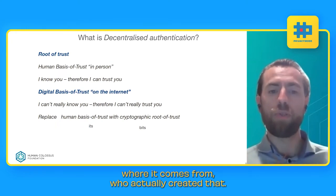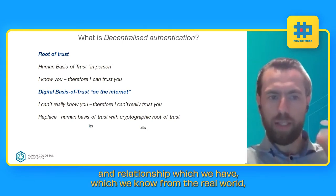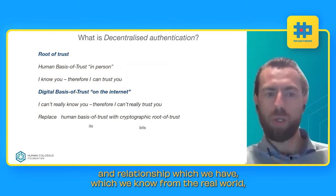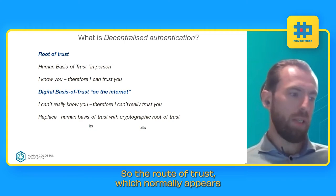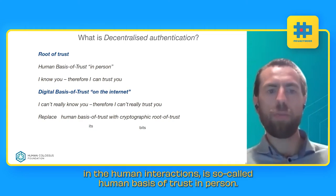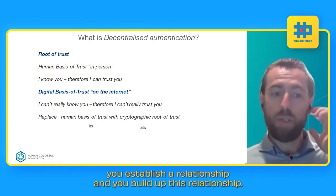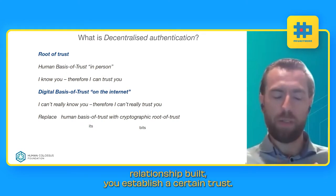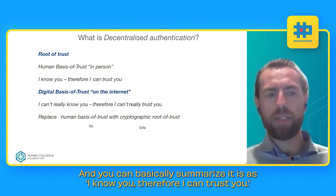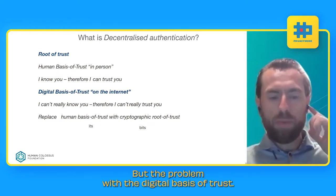Authentication is about figuring out who something comes from — who actually created it. We need to speak about the basics of trust and the relationships we know from the real analog world versus what we operate in the digital space. The root of trust in human interactions is the so-called human basis of trust — in person. When you meet someone, you establish a relationship and build it over time. You can summarize it as: the more I know you, the more I can trust you. I know you, therefore I can trust you.